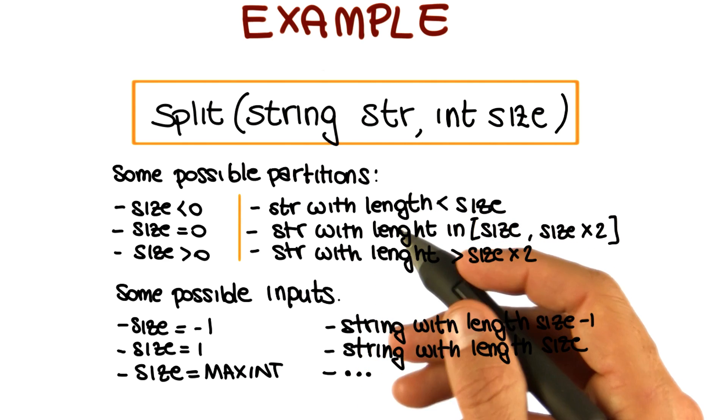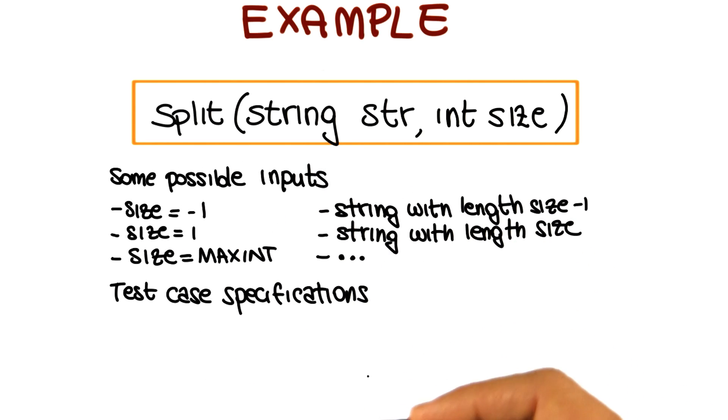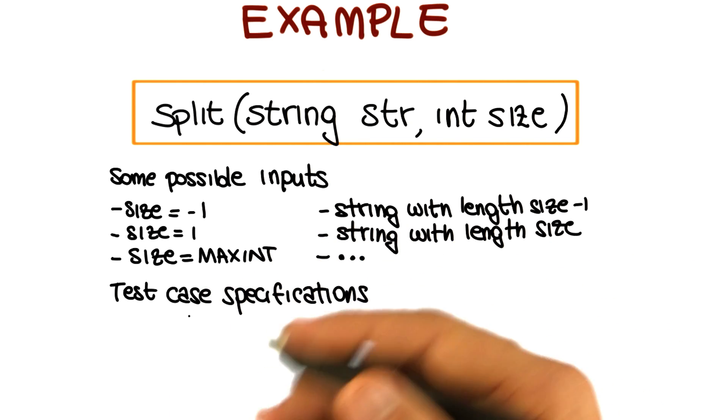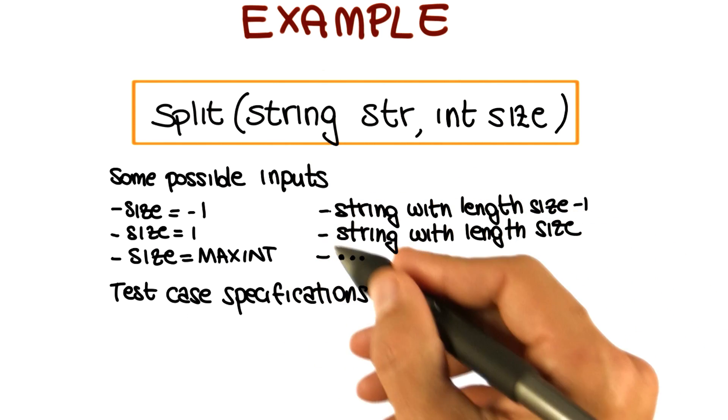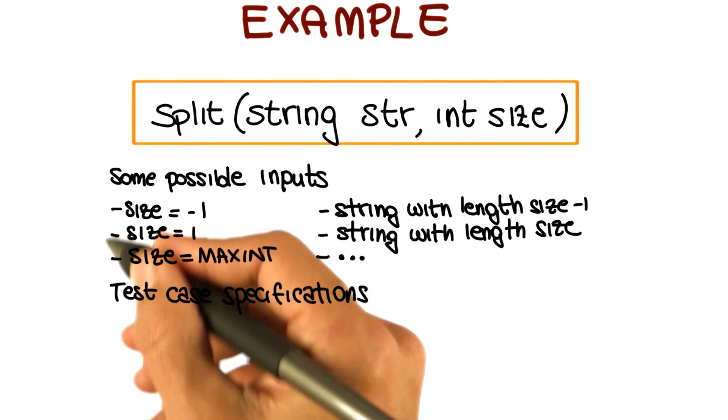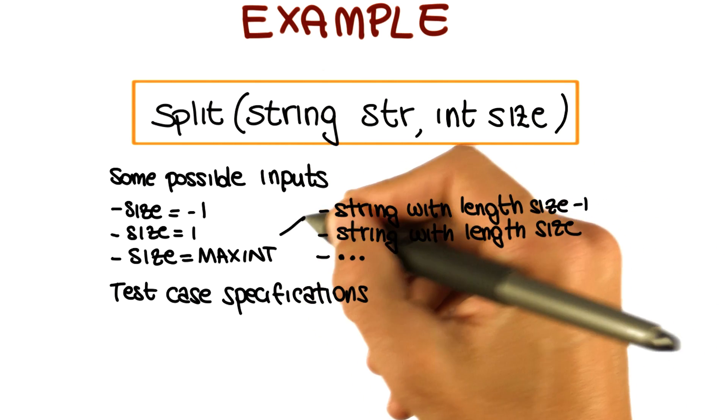So let me once more rearrange this a little bit. I first remove the description of the subdomains because we won't use them in this step. And I moved up the set of our possible inputs that we're going to combine to create test case specification. And one possible way of doing that is simply to combine the values for the first parameter and the values for the second parameter. So the Cartesian product.